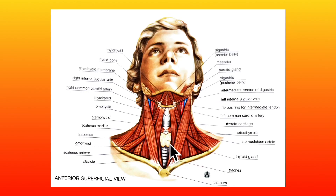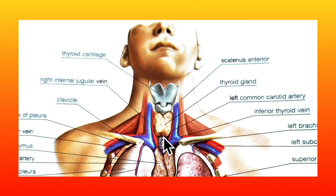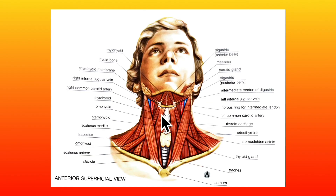Now let's learn about the relations of the trachea. First, the anterior relations. Anteriorly, the trachea is related to the isthmus of the thyroid gland, covering the 2nd and 3rd tracheal rings. Below the isthmus are the inferior thyroid veins, followed by the pretracheal fascia enclosing the thyroid and inferior thyroid veins, then the sternohyoid and sternothyroid muscles, the investing layer of deep cervical fascia and the suprasternal space, and finally the skin and superficial fascia.